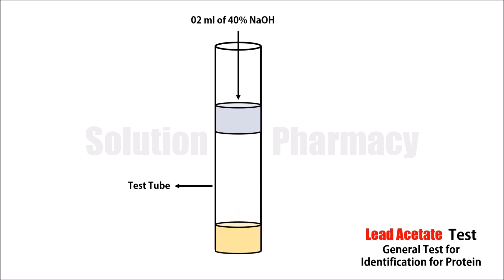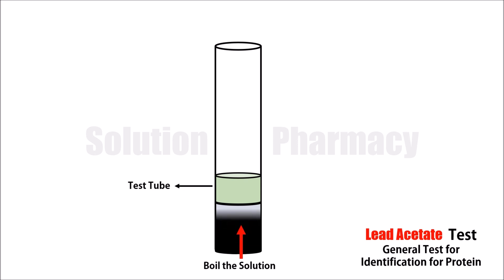Lead acetate test is the specific identification test for those proteins which have sulfur-containing amino acids like cysteine and methionine. So let's know how lead acetate test is performed to identify any protein sample containing sulfur. Let's start.